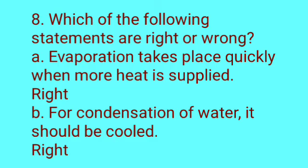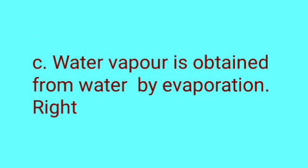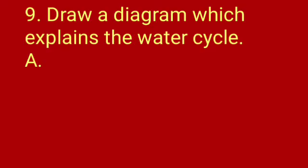Eighth question: Which of the following statements are right or wrong? A: Evaporation takes place quickly when more heat is supplied — this is correct, because more heat leads to more evaporation. B: For condensation of water it should be cooled — correct, water vapor gets cooled for condensation to occur. C: Water vapor is obtained from water by evaporation — also correct, we get water vapor only through evaporation.